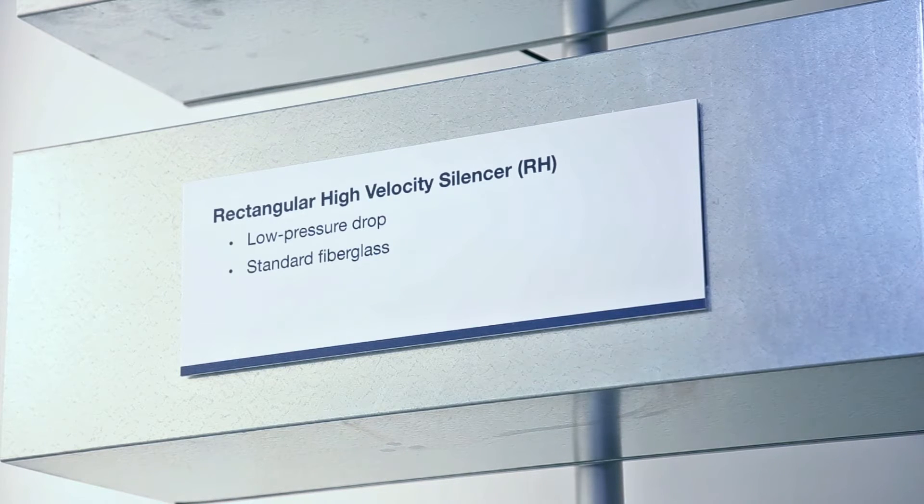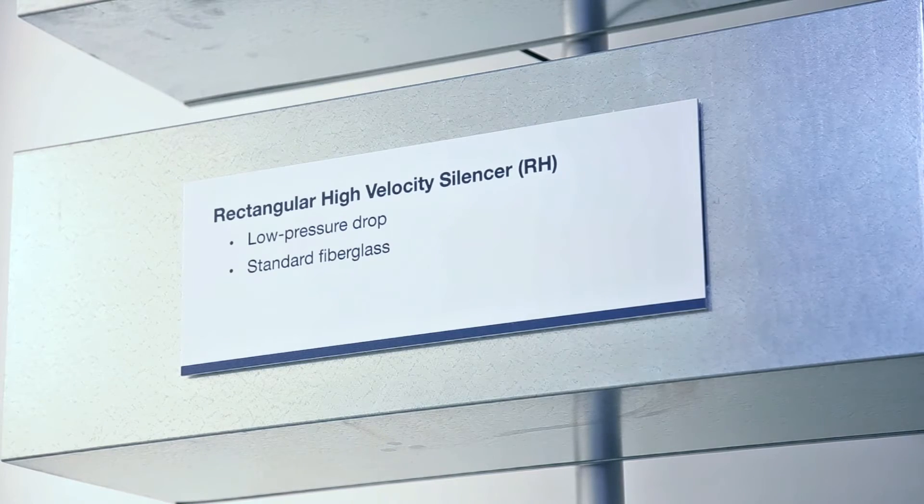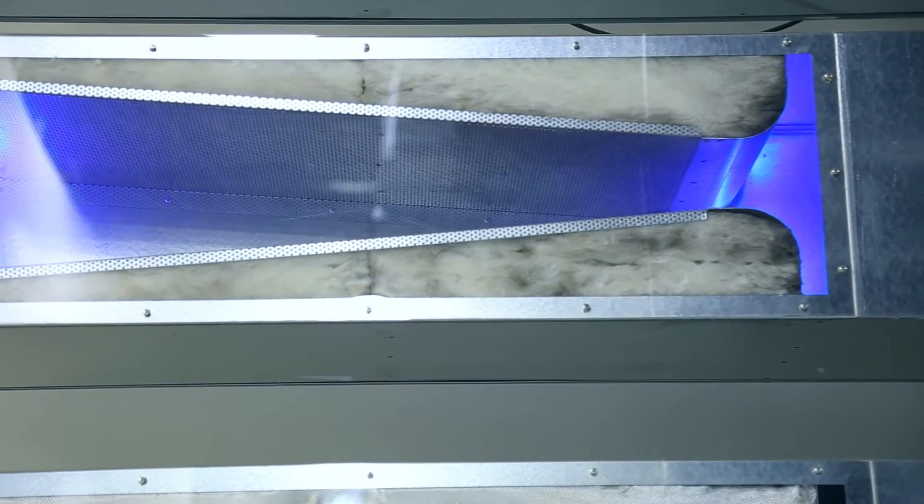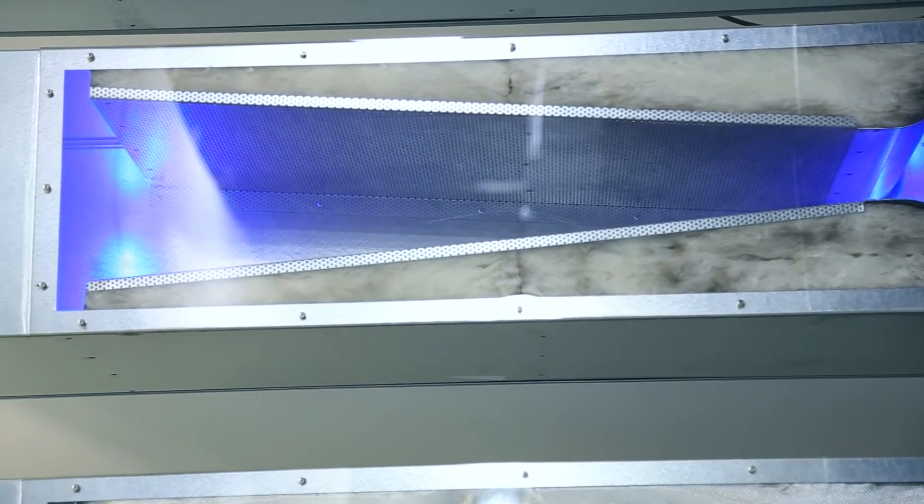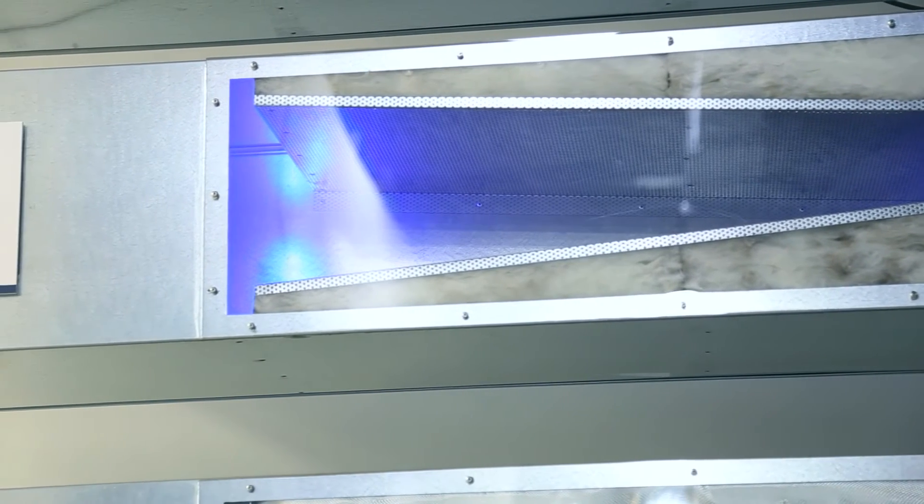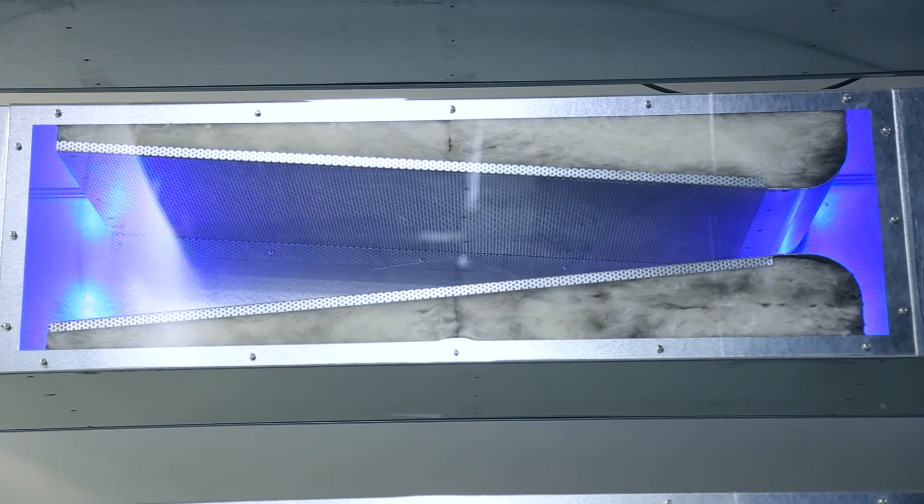Next we will look at the rectangular high velocity or RH silencer. The baffle configuration for the RH silencer is a tapered baffle along the length. We'll measure the sound and airflow through this silencer.